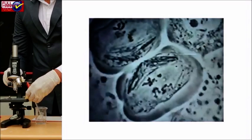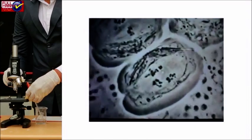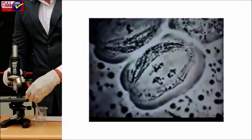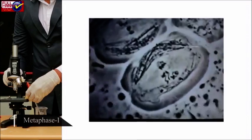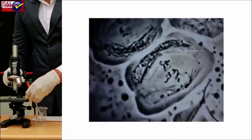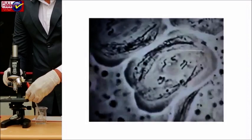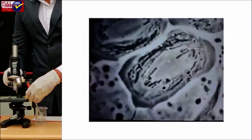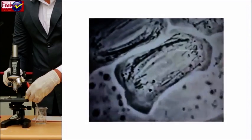Metaphase I: The bivalents orient themselves at random on the equatorial plate. The centromere of each chromosome of the terminalized tetrad is directed towards the opposite poles. The chromosomal microtubular spindle fibers remain attached with the centromere, and homologous chromosomes are ready to separate.